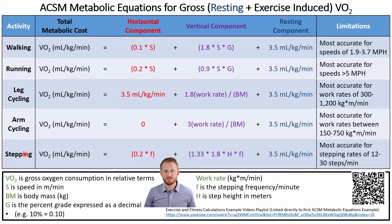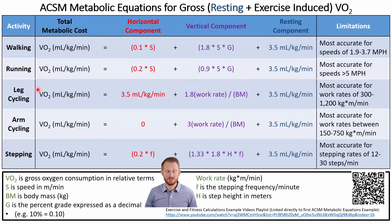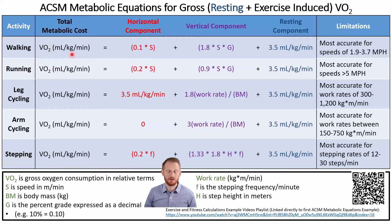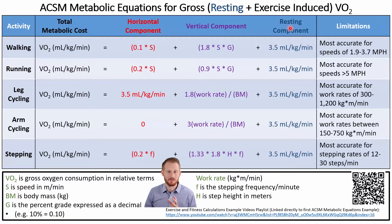There are equations for other types of exercise, like elliptical machines, that you can find in the research literature, but they aren't quite as high quality, so the ACSM doesn't include them in their typical textbooks. For each of these equations, we have the total metabolic cost in VO2 — relative oxygen consumption units, milliliters of oxygen per kilogram of body mass per minute. VO2 is on one side of the equation, and on the other side you have the horizontal component plus the vertical component plus the resting component.